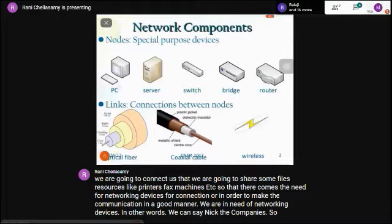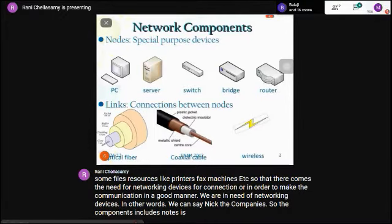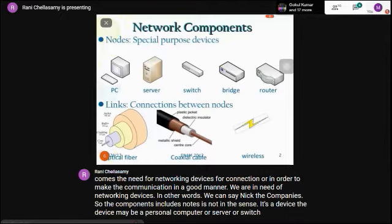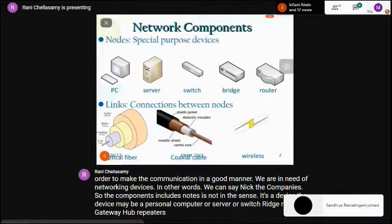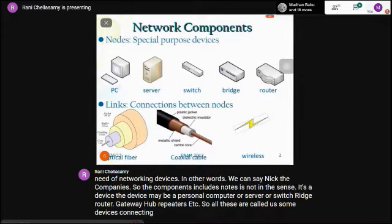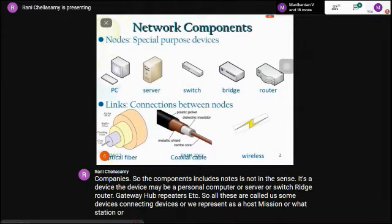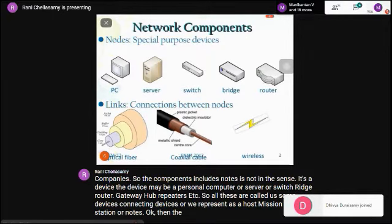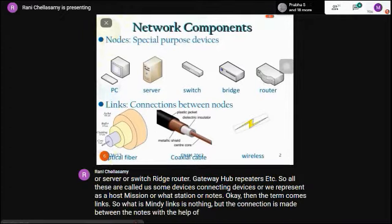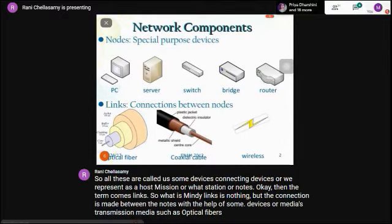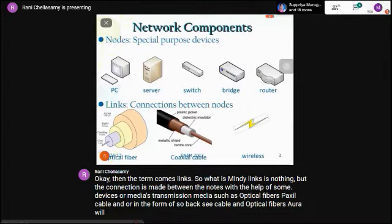The components include nodes — a node is a device such as a personal computer, server, switch, bridge, router, gateway, hub, or repeater. These are called connecting devices, represented as a host, workstation, or nodes. Links are the connections made between nodes using transmission media such as optical fibers and coaxial cable for wired connections.